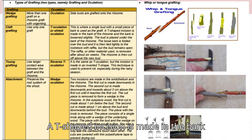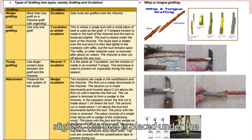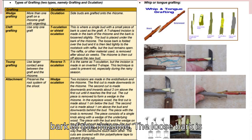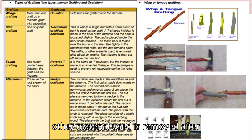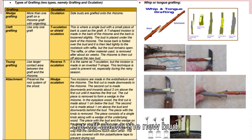The loose bark is folded over the bud and it is then tied tightly to the rootstock with raffia, but the bud remains open. The raffia or other material used is removed after about six weeks. The rootstock is then cut off above the new bud.